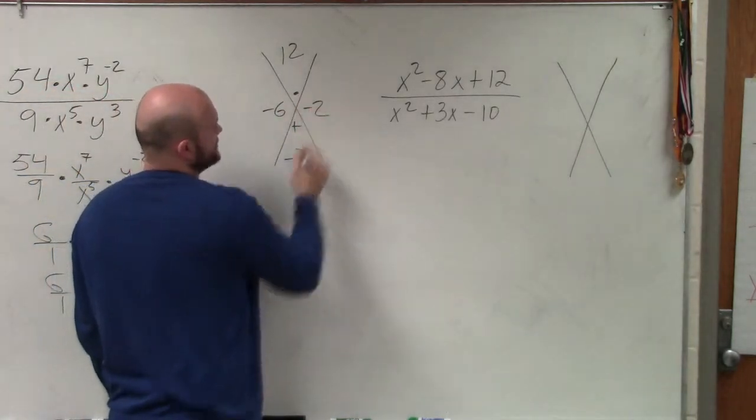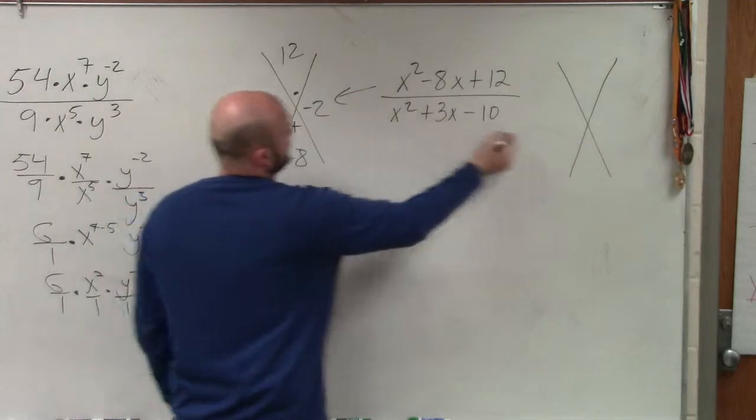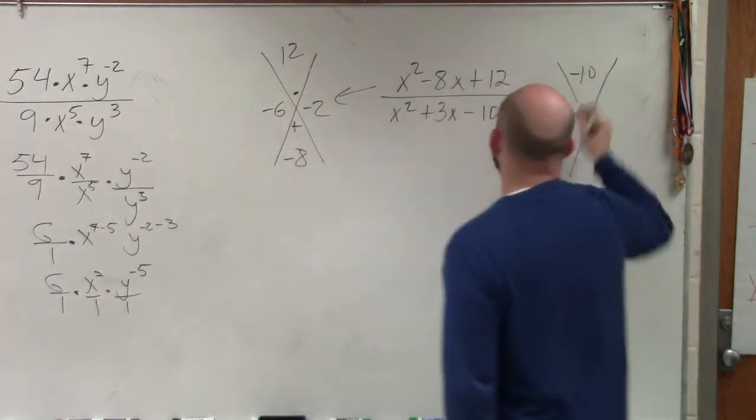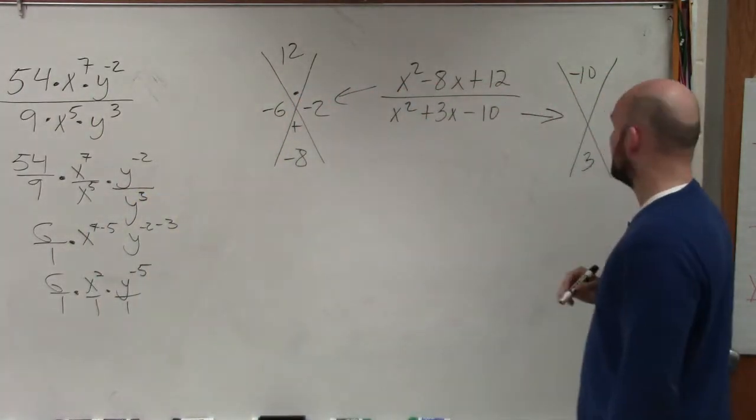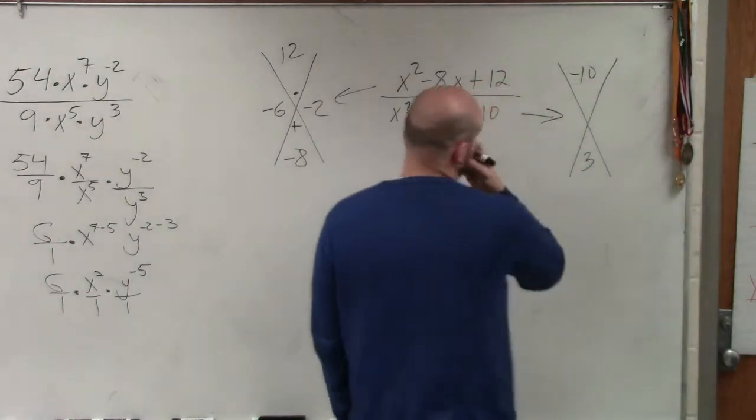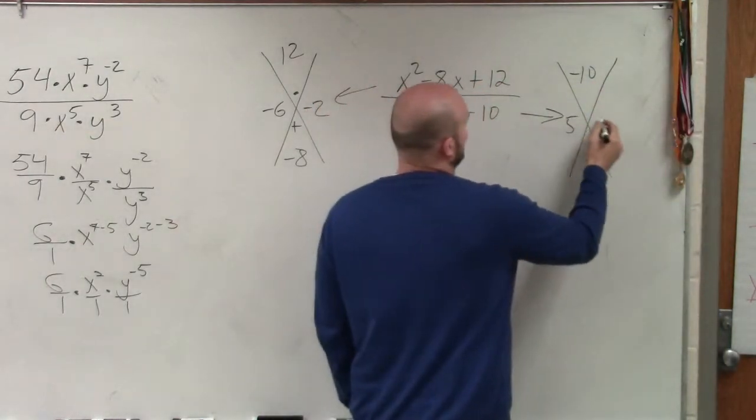Negative 6 and negative 2. Then over here, what two numbers multiply to give you negative 10 and add to give you positive 3, positive 5 and negative 2.